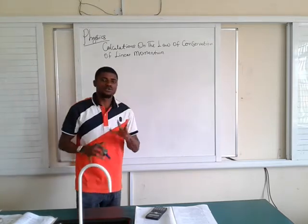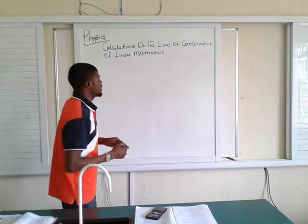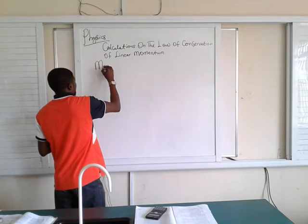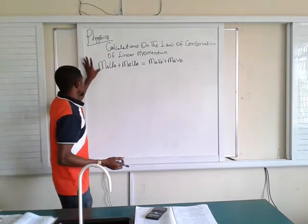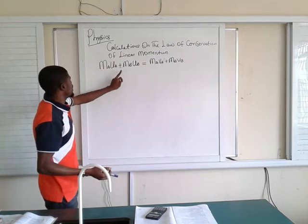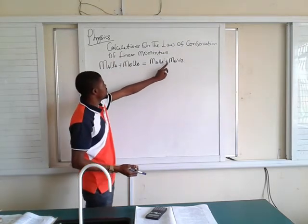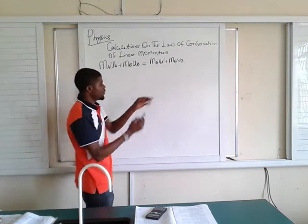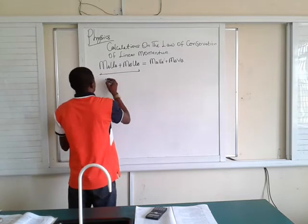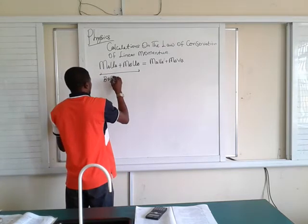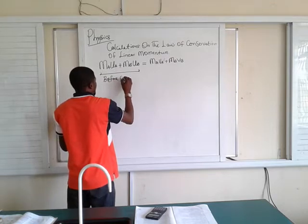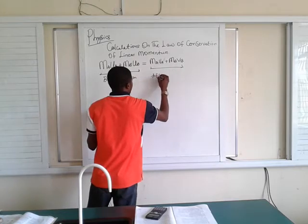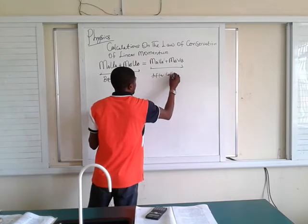The law of conservation of linear momentum states that M_A times U_A plus M_B times U_B equals M_A times V_A plus M_B times V_B. The left side is before collision, and the right side is after collision.